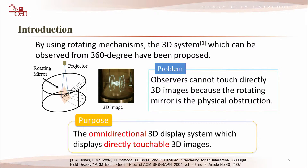Previously, many 3D displays which use a lot of projectors and rotating mechanisms have been proposed to extend the viewing angle of the 3D object. This is one of the typical systems which uses a rotating mechanism. This system, which uses a high-speed projector and rotating mirror, can be observed from 360 degrees. It displays the omnidirectional 3D images by changing the projected image which corresponds to the direction of the mirror.